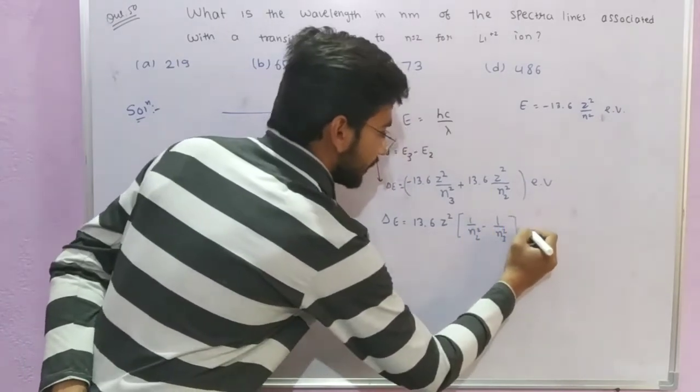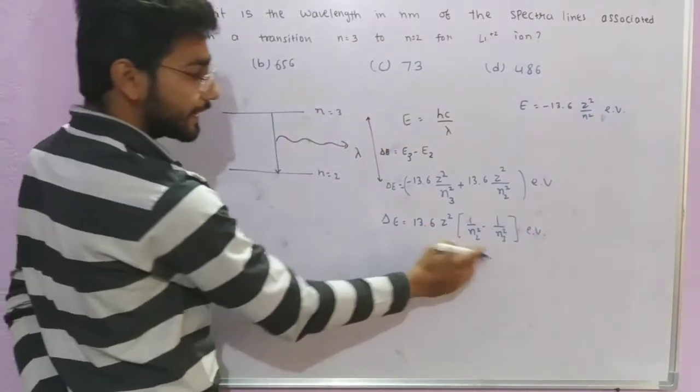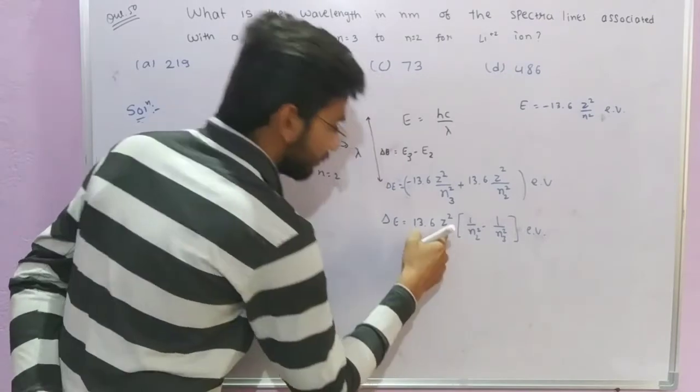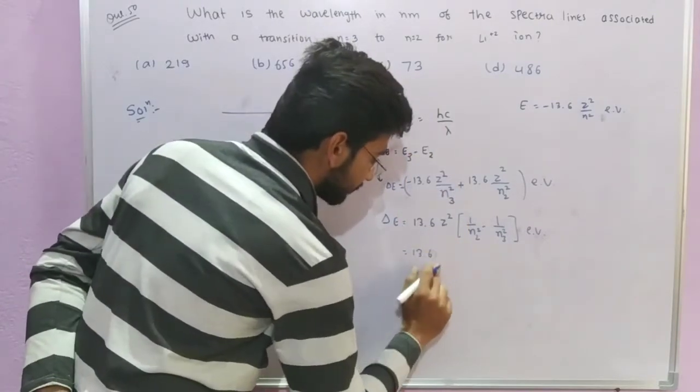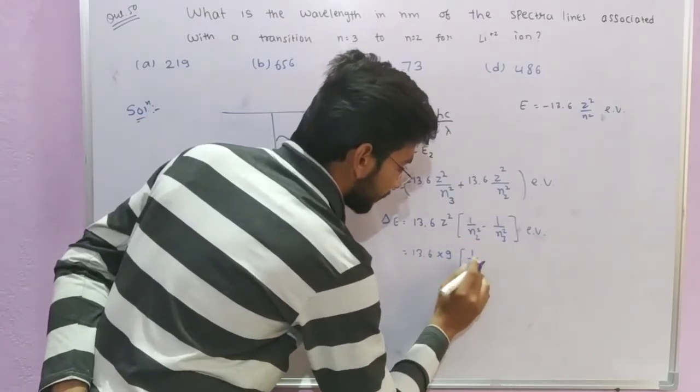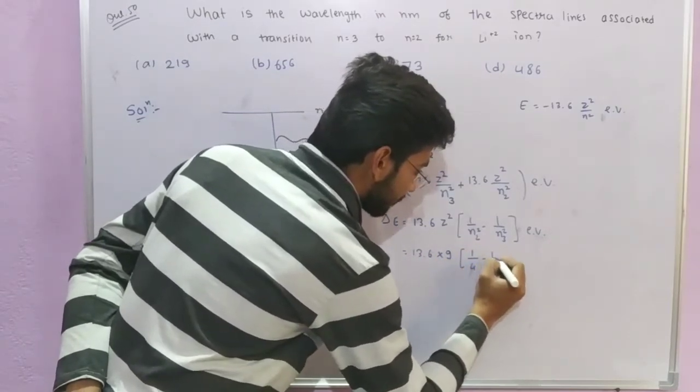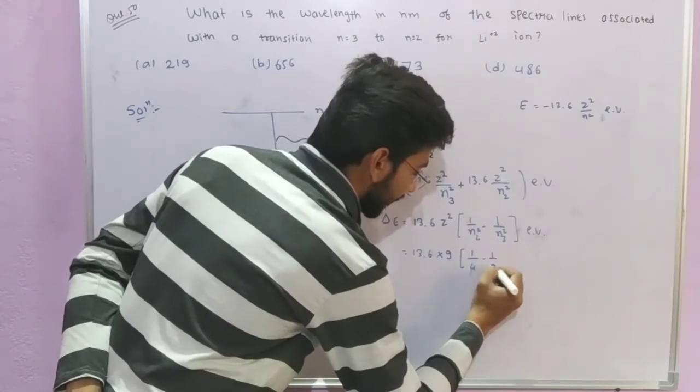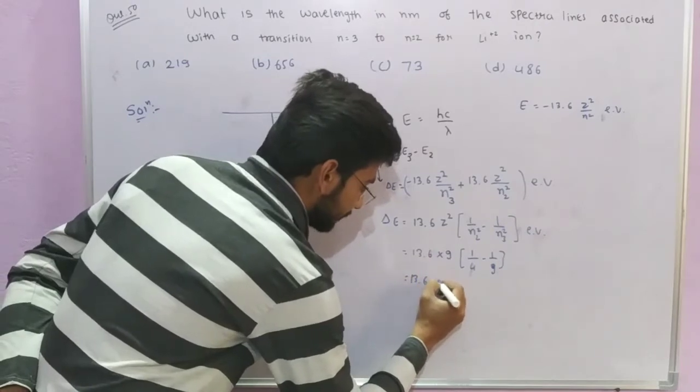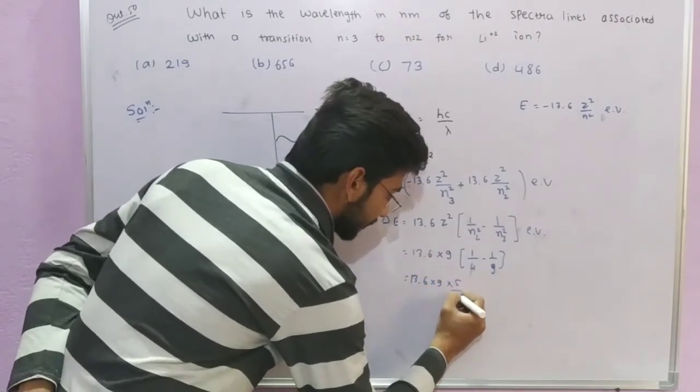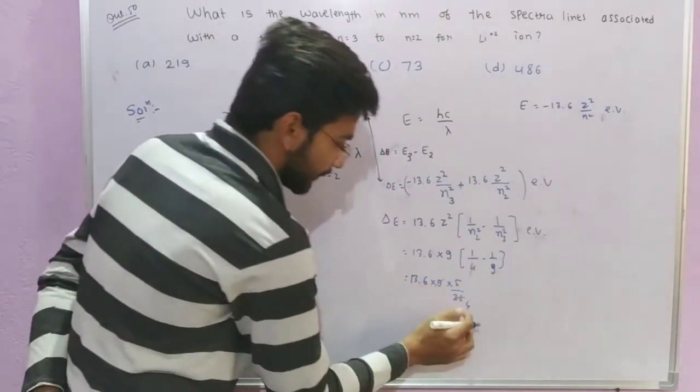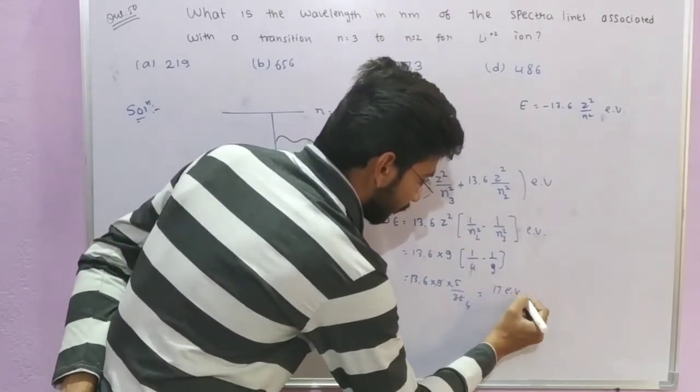Put the values: z² equals 9 for lithium, n₂ is 2, n₃ is 3. So z² is 9, 1 upon n₂² is 1 upon 4, minus 1 upon n₃² is 1 upon 9. This gives 5/36. So 13.6 times 9 times 5 upon 36, which simplifies to 17 electron volts.